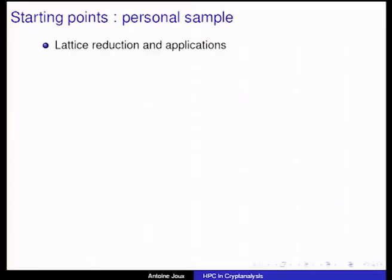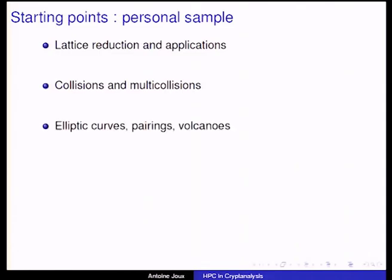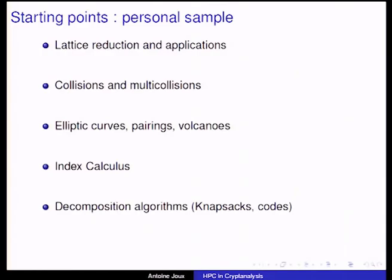What kind of starting point can you have? Basically anything in crypto — lattice reduction, hash collisions and multi-collisions, elliptic curves and pairings, index calculus, new decomposition algorithms for knapsacks or codes, Gröbner basis computations, and more. This is just a short sample of things which are not trivially easy to compute and which can be a lot of fun when doing large computations.